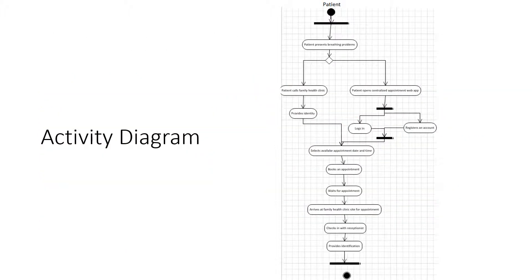The third diagram is an activity diagram that represents the patient going through different actions to visit their family health clinic. They were presented with two different options to book an appointment — either calling or going through the web application — and then they undergo these different activities to reach their clinic appropriately.